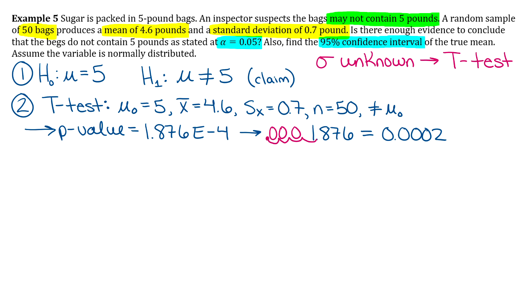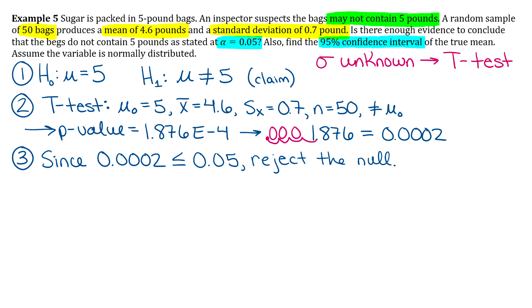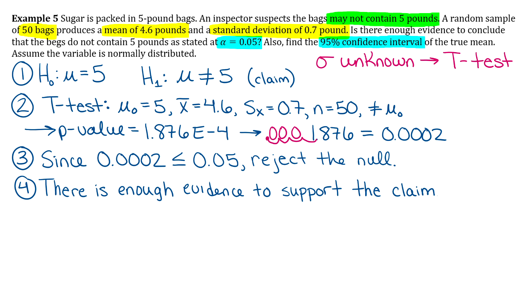We compare the p-value with alpha. Since 0.0002 is definitely less than or equal to 0.05, we reject the null hypothesis. For the conclusion in step four, since we rejected the null and the claim is in the alternative, there is enough evidence to support the claim. That completes our hypothesis test.